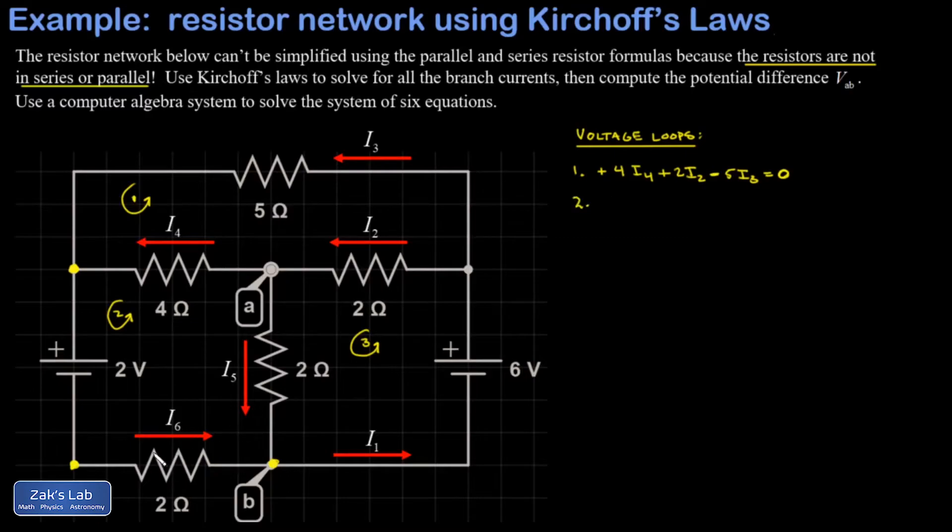Number two, I cross over this 2-ohm resistor, same direction as I6. I cross over this 2-ohm resistor, opposite direction of I5. That's a voltage increase to I5. I cross over this 4-ohm resistor, same direction as I4. And finally, I go from the high side to the low side of this power source. So that's minus 2 volts.